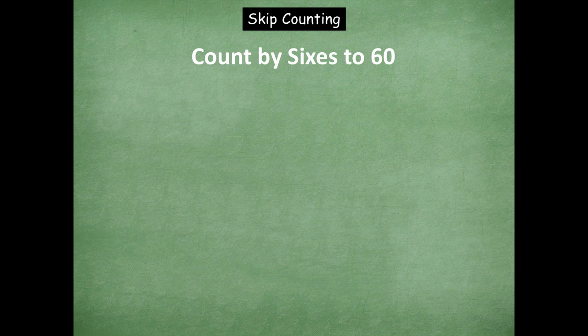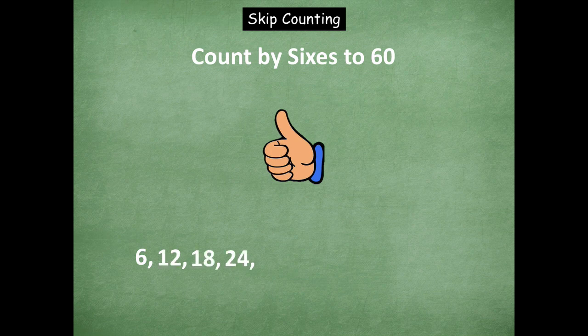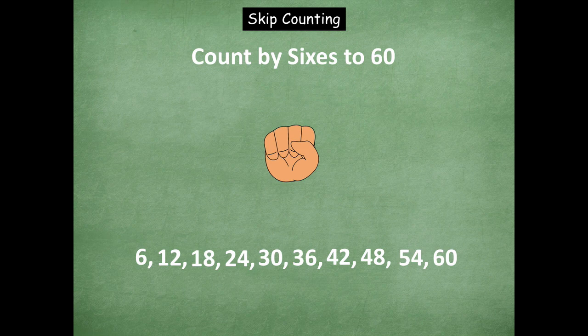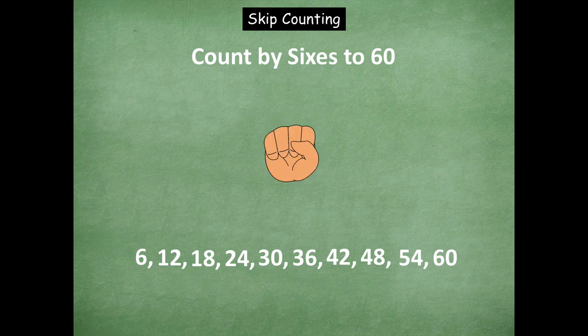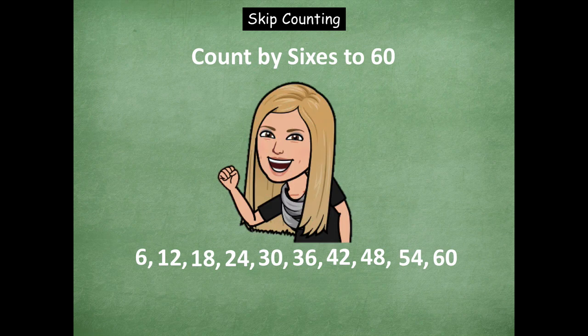We're going to start with counting by sixes to 60. Counting up: six, 12, 18, 24, 30, 36, 42, 48, 54, 60. Now counting down: 54, 48, 42, 36, 30 — and back up: 36, 42, 48, 54, 60. Great job counting by sixes to 60.